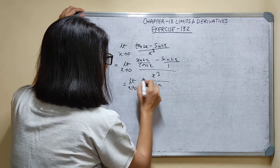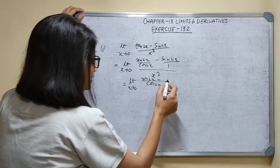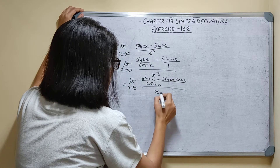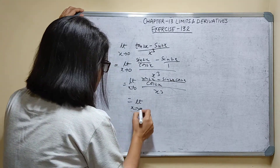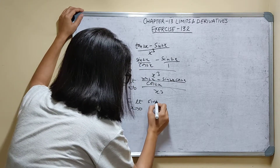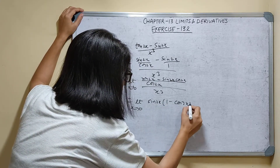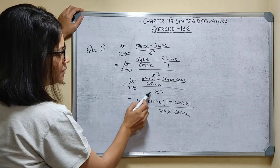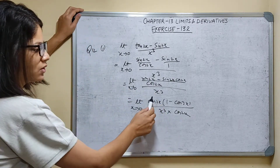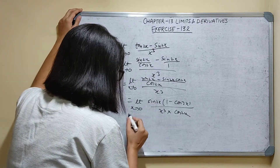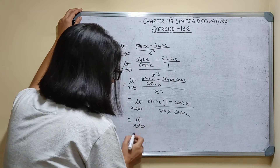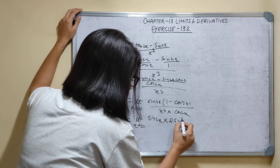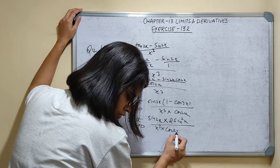Assuming cos x in the denominator, we get sin x minus sin x cos x upon x cube into cos x. Taking sin x common, we have sin x times (1 minus cos x) upon x cube into cos x. Using the identity 1 minus cos x equals 2 sin squared x, this becomes sin x times 2 sin squared x upon x cube into cos x.